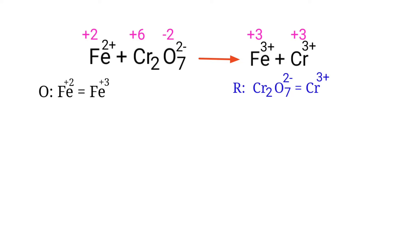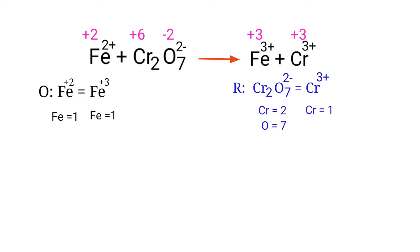Now we balance the number of atoms in the two half-reactions. In the oxidation half-reaction, the number of atoms are already balanced on both sides. But in the reduction half-reaction, the atoms are not balanced. To balance the Chromium atoms, we need to put a coefficient of 2 in front of Cr³⁺.